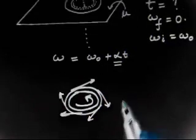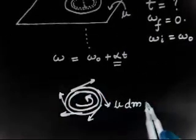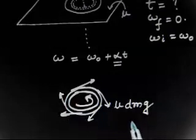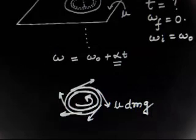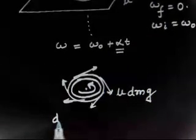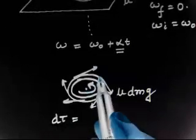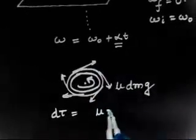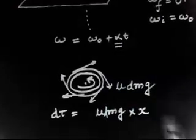This friction force will be mu times the normal force. Let the mass of this ring be dm, so friction force = mu·dm·g. What is the torque of this friction force about the center? Let us say this ring is at distance x from the origin. So d-tau = mu·dm·g·x.